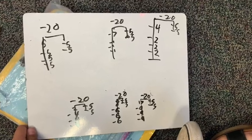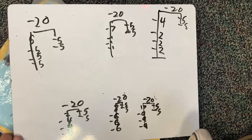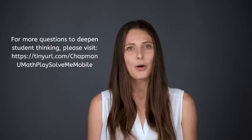Some Solve Me Mobiles have more than one set of possible values that work. Once students solve a mobile with one set of values, to deepen their thinking ask: can you think of other numbers that would work in this mobile? How do these new numbers relate to the old ones? Why does it work with different numbers? Some other questions you might ask are: how can you represent your mobile as an equation using numbers and mathematical symbols, and how do you know this? Can you create a story problem to go with your mobile? Can that same story go with your equation? Why or why not?